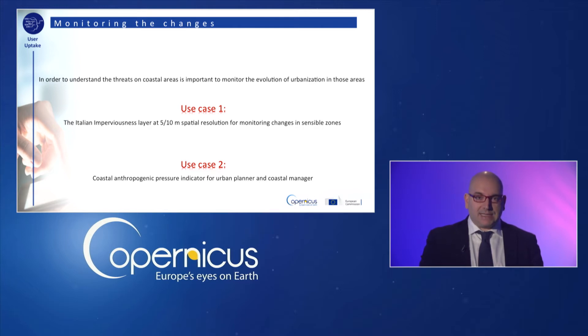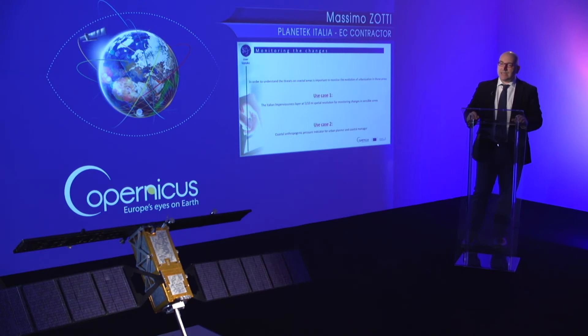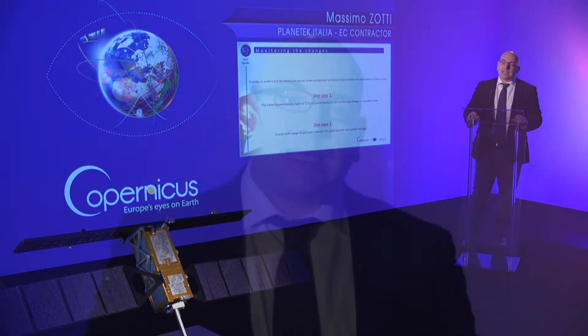Two use cases are presented. First, the Italian very high resolution imperviousness layer is used to monitor the changes in coastal areas. Second, an indicator related to the coastal anthropogenic pressure is shown. Urban planners and coastal managers can use it in their daily tasks.